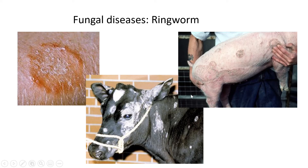The same thing can happen in cattle and pigs. For the cow, you can see excessive hair loss and bare skin on the areas affected by the fungus — all the hair gone. The skin is also very dry and flaky. The same thing happens on pigs: this usually causes hair loss and you can see circular patterns on the body of the pig.